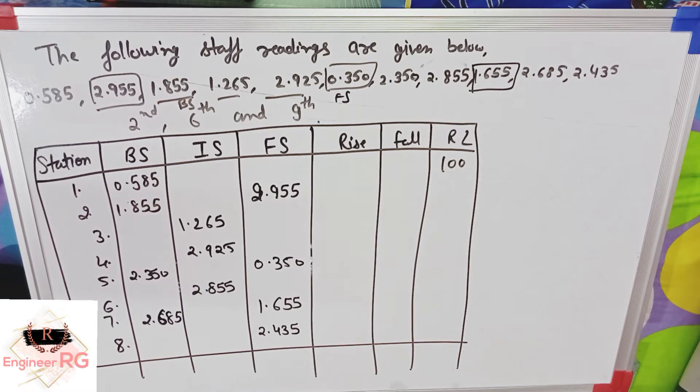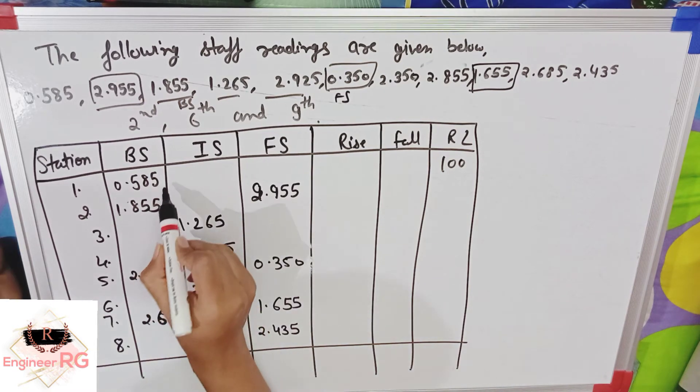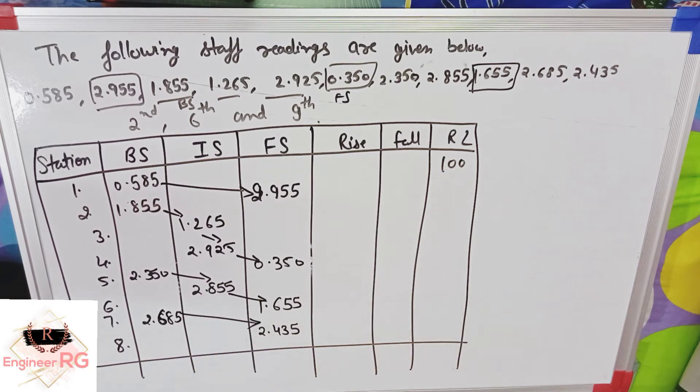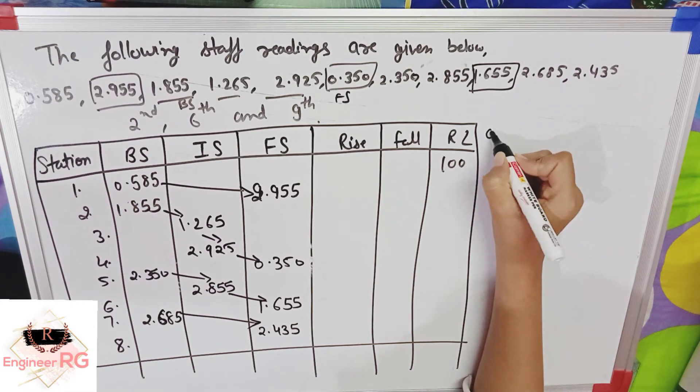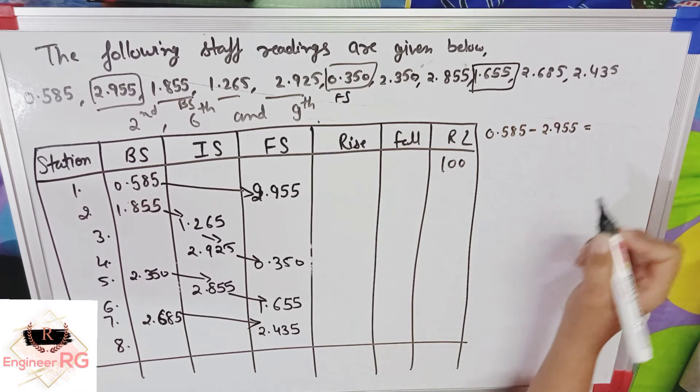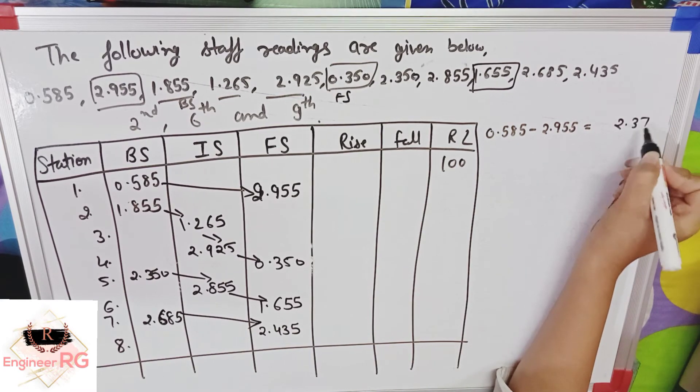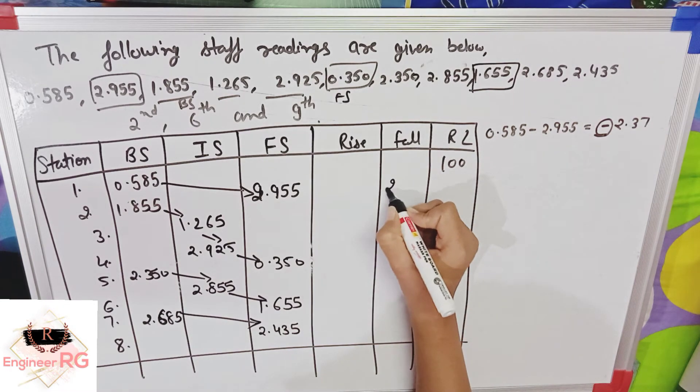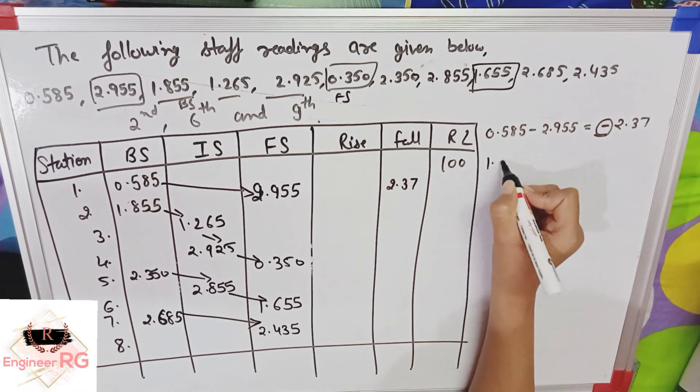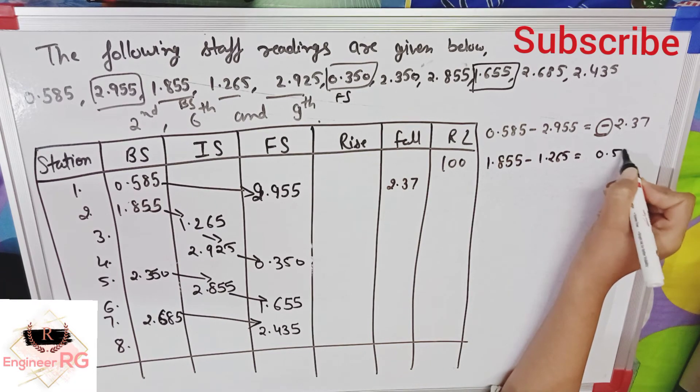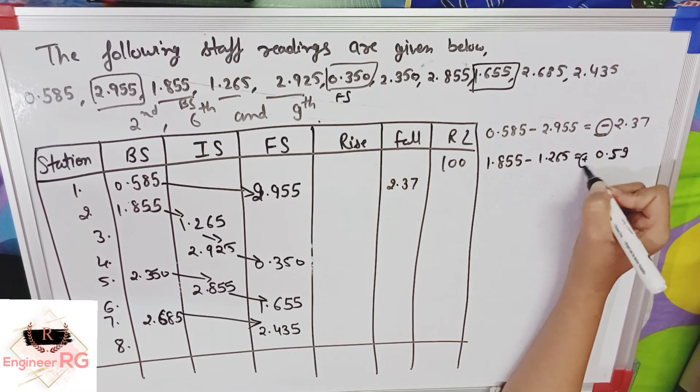Now, we have to remove rise and fall. Rise and fall is the most easy thing to do. You have to make arrows like this. So, we have to subtract 1.855 minus 2.955. Once we subtract, there is a value of 2.37, a negative. The negative means it's fall. So, we write 2.37 in fall. Then, the value is 1.09, which is positive. Positive is positive, so I put it in rise.